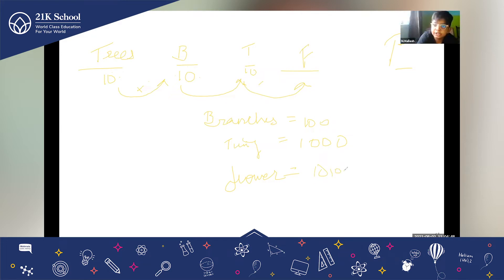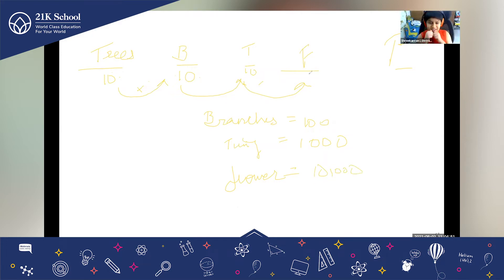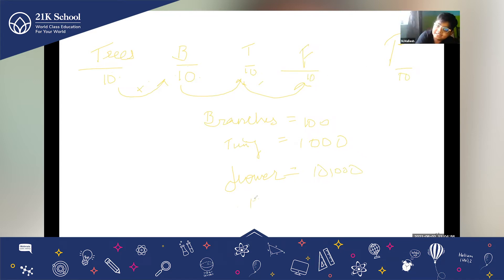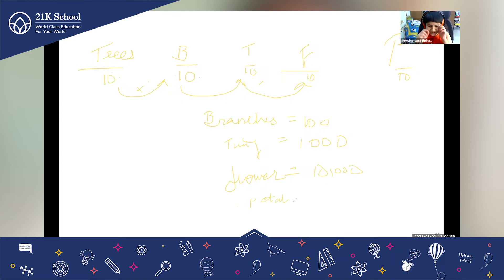10,000 into 10 is 1 lakh — that's 100,000. So there are 1 lakh petals in total. What is the answer? 1 lakh.